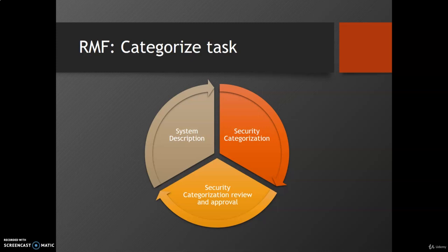The first task is system description — document the characteristics of the system. A description of system characteristics is documented in the security and privacy plan, included as an attachment to the plans, or referencing other standard sources for information generated as part of the SDLC (software development life cycle). Duplication of information is avoided whenever possible. The level of detail in the security and privacy plan is determined by the organization and is commensurate with the security categorization and the security and privacy risk assessment of the system.